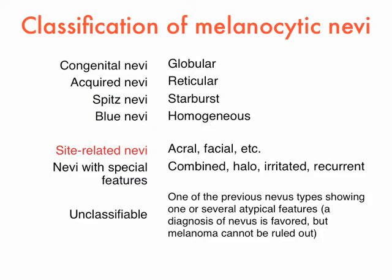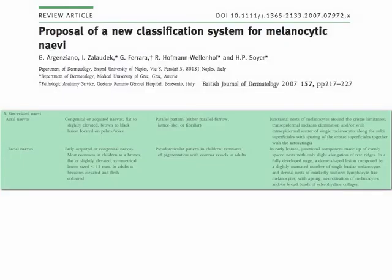The fifth category is represented by site-related NEVA. Site-related NEVA exhibit peculiar clinical, dermoscopic, and histopathologic features that are related to the specific anatomic structure where they are located. This table summarizes the morphologic features of NEVA located on the face and on the palms and soles, the two locations where melanocytic NEVA exhibit the most peculiar features. A more extensive list of site-related NEVA should include NEVA located on the nails, genitalia, umbilicus, and nipple.